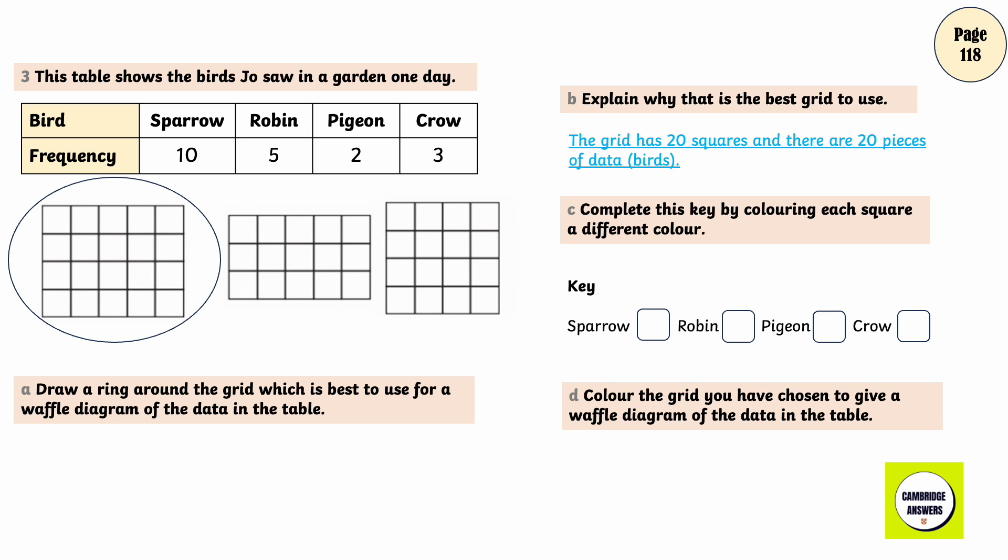Complete this key by colouring each square a different colour. Sparrow, Robin, Pigeon, Crow. Color the grid you have chosen to give a waffle diagram of the data in the table. Sparrow, Robin, Pigeon, Crow.